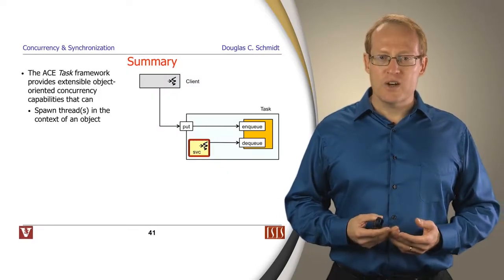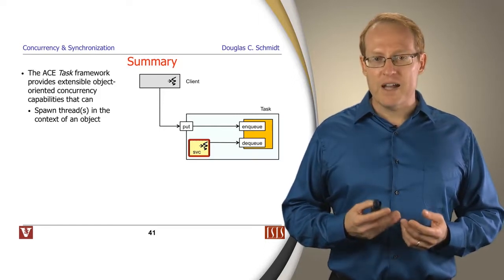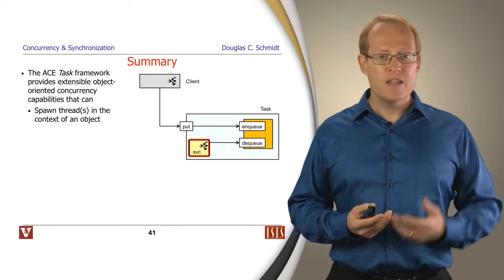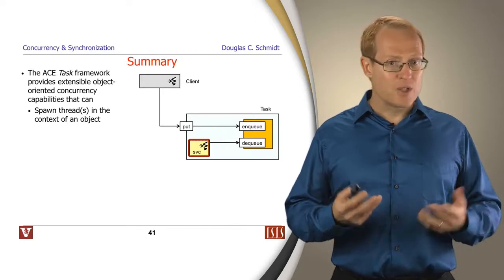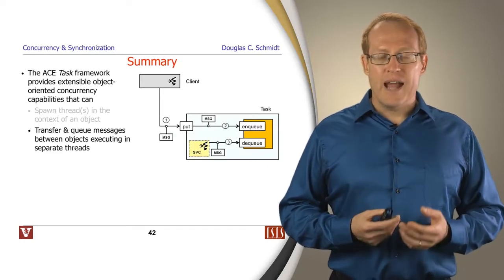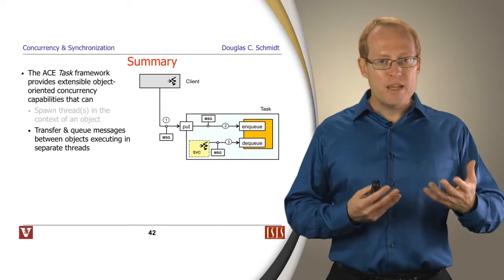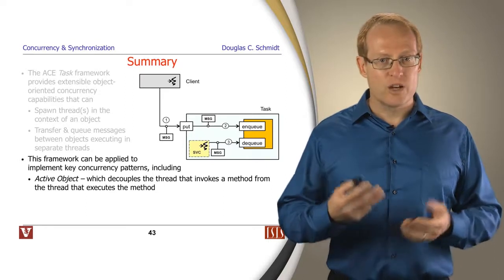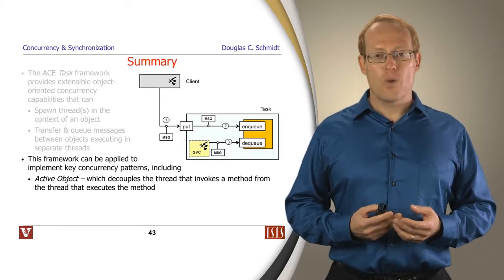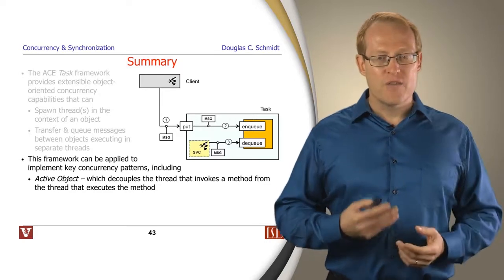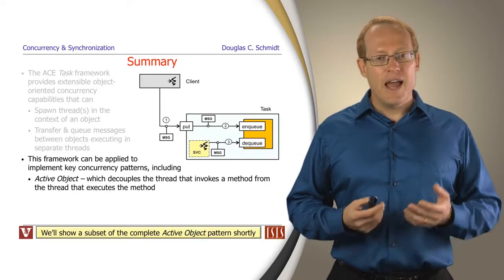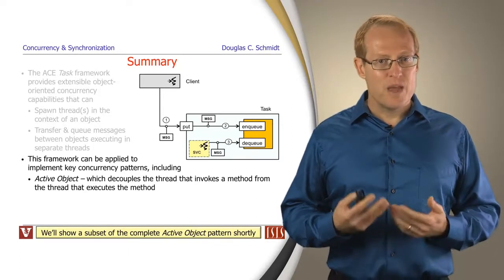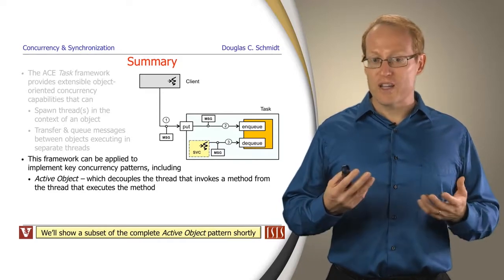So to summarize this particular discussion about the ACE task framework, it provides a nice extensible object-oriented concurrency capability that can spawn threads in the context of an object, so it's an object-oriented concurrency model, and then it allows you to transfer and queue messages between the different threads. You can use this particular framework for various things. We're going to focus first on using it for active objects where we're trying to decouple the thread that invokes an operation from the thread that runs the operation, and we'll be using a subset of the full-blown active object pattern to do this because that's going to give us just the features we need without incurring additional complexity or overhead.